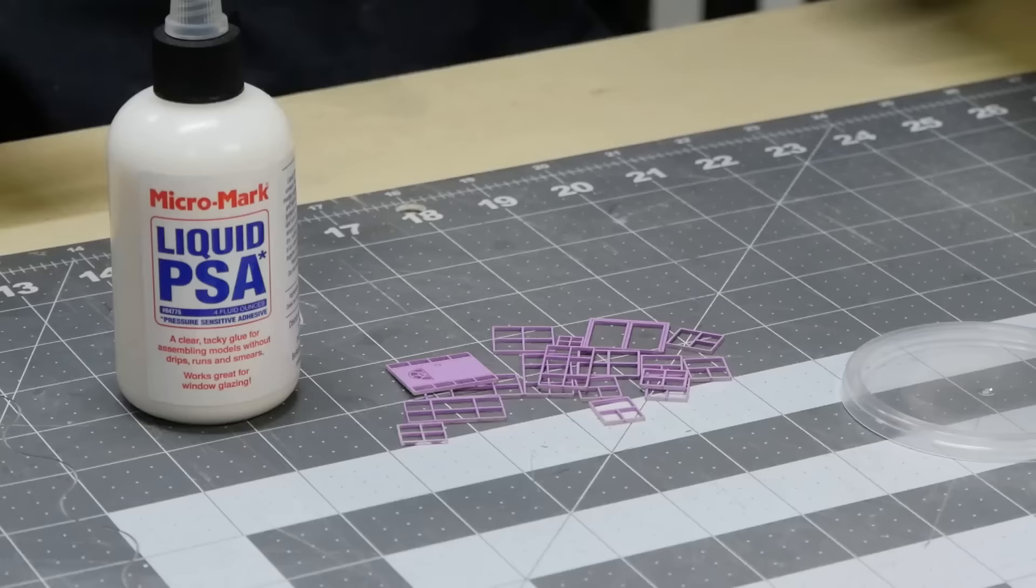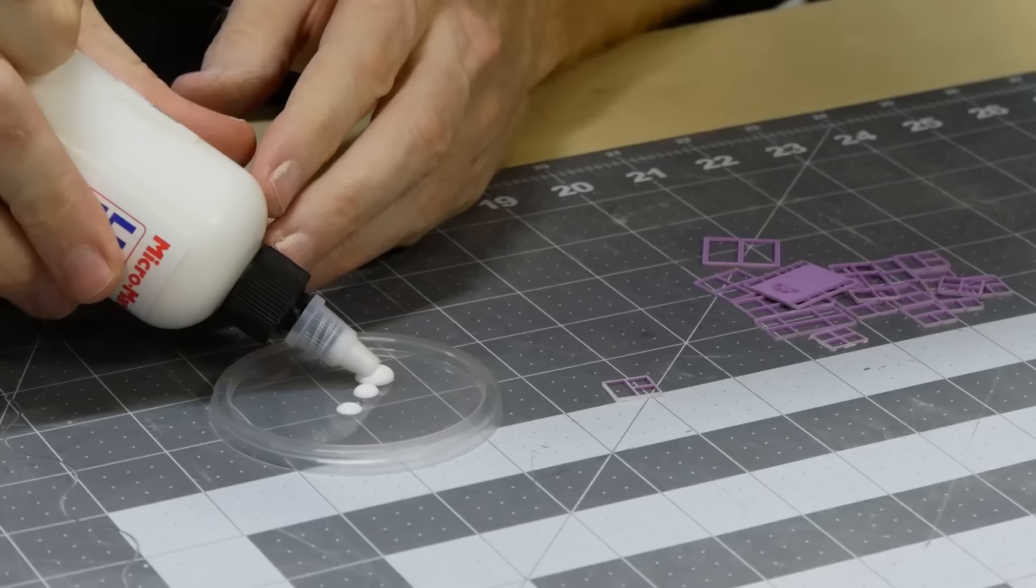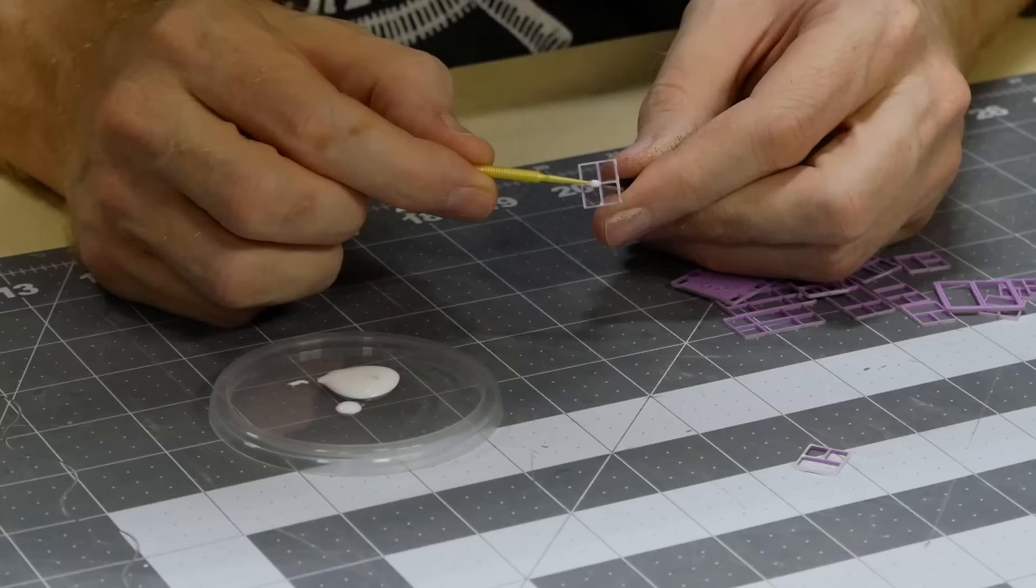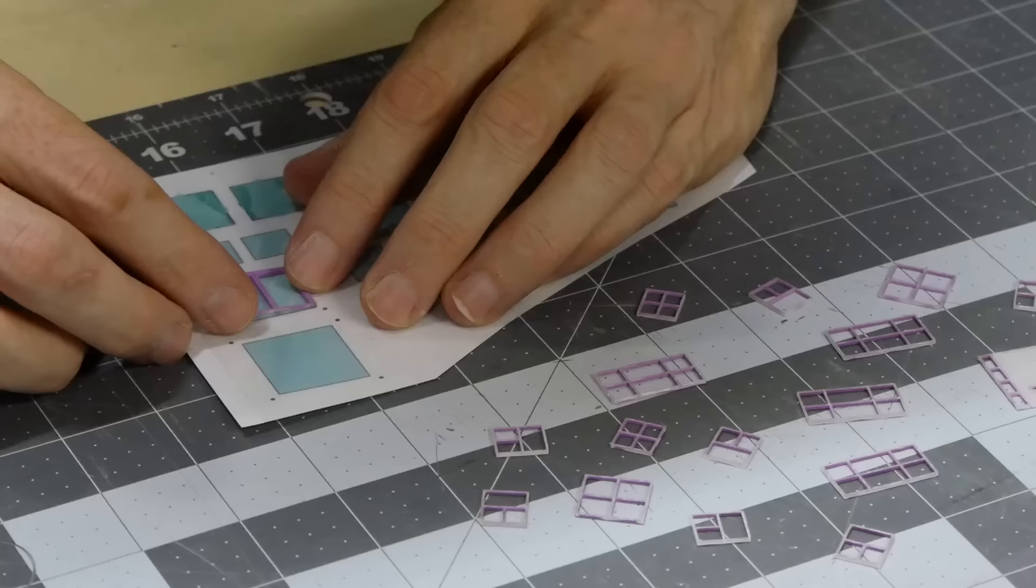Now for the frames. The back of each frame has a thin bead of liquid PSA applied. It only needs to be a very small amount applied to the back of each window frame. Once this dries clear it will remain very tacky.